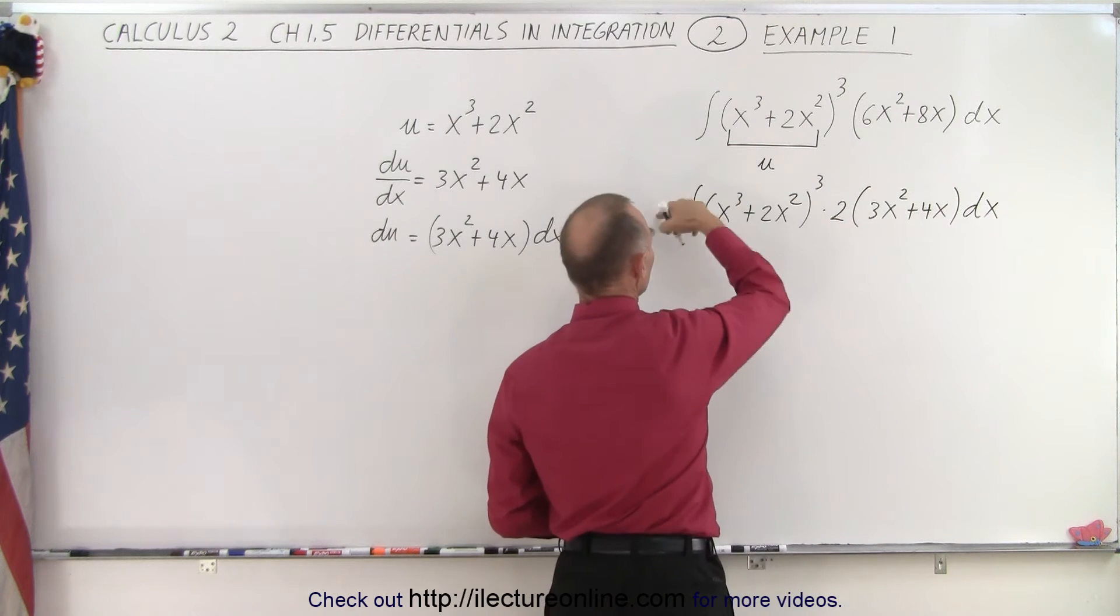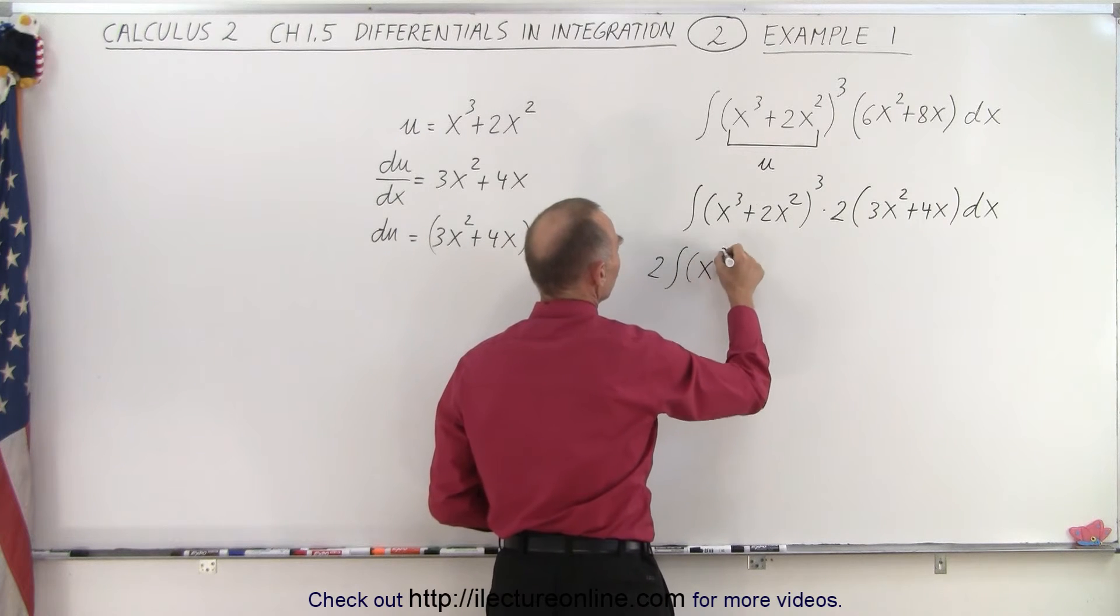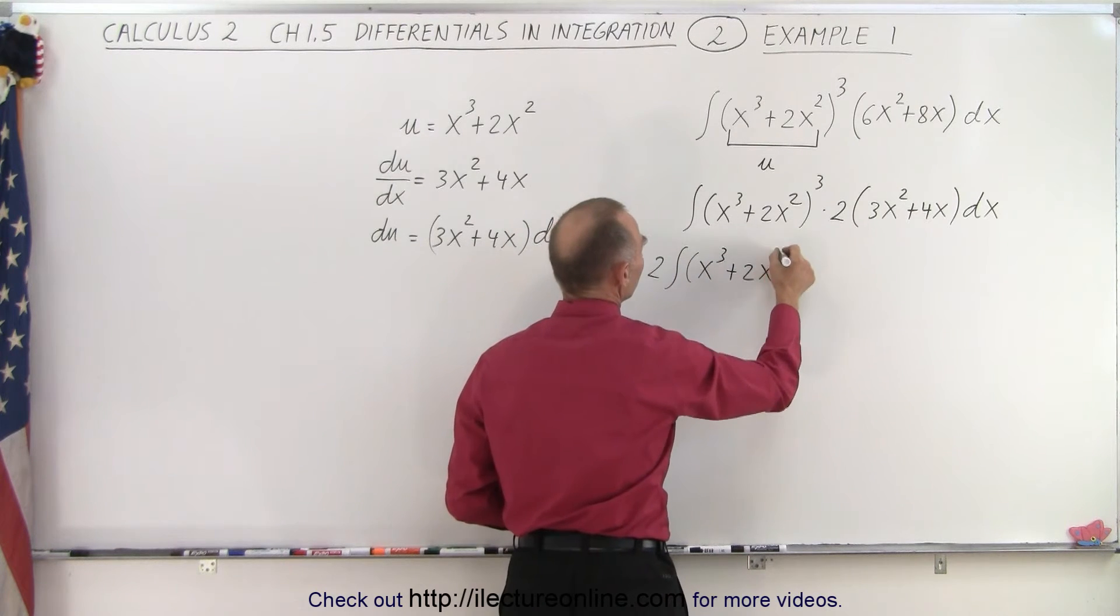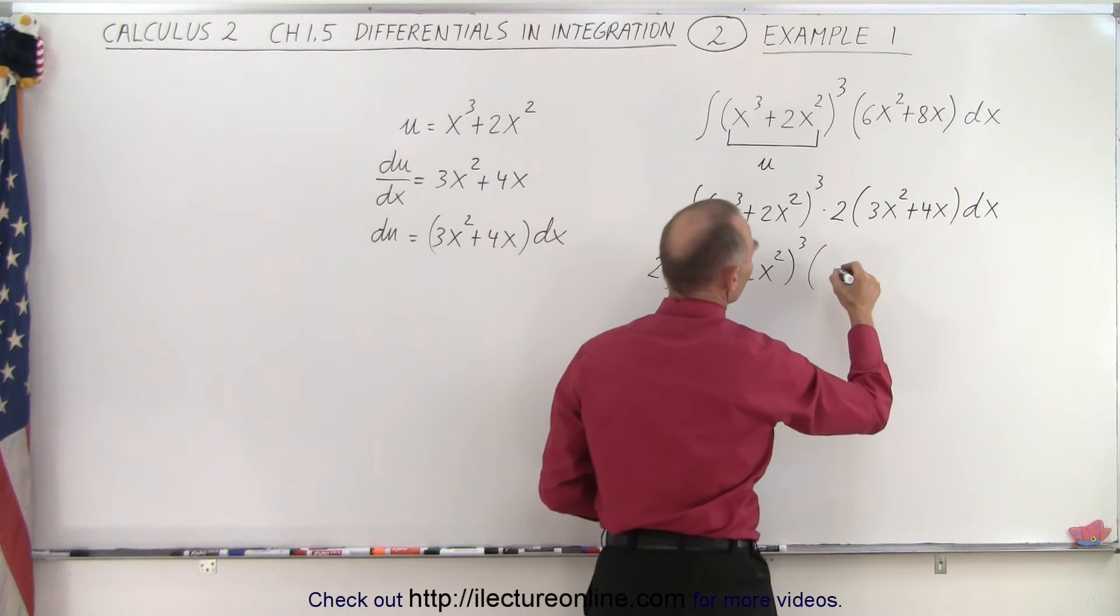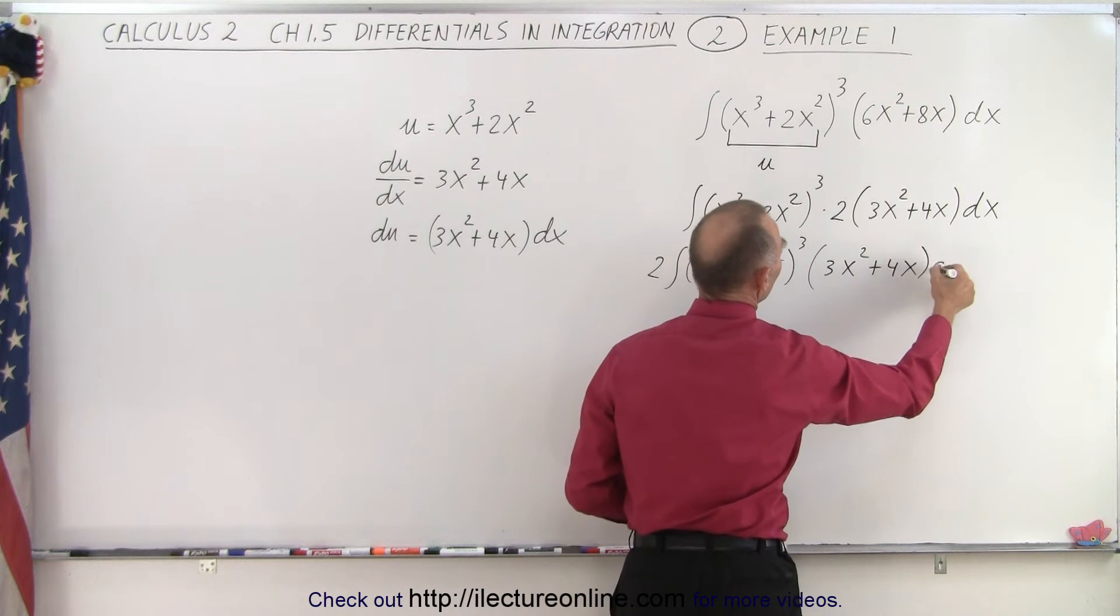Then if I move the 2 to the front, I get 2 times the integral of (x³ + 2x²)³ times (3x² + 4x) times dx.